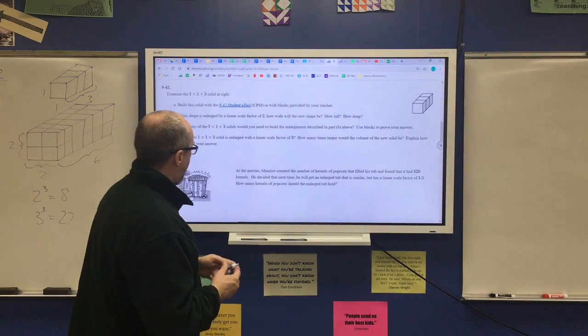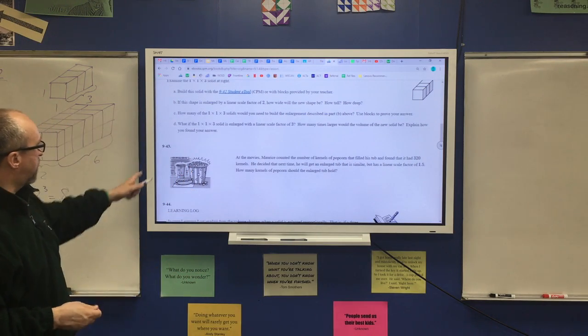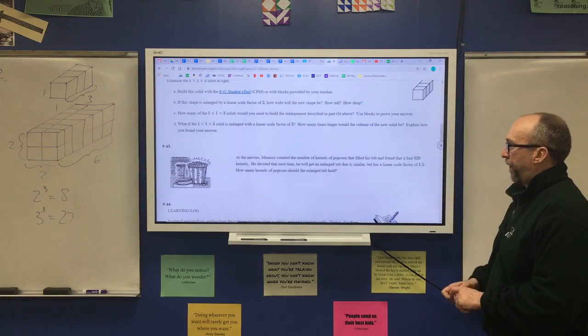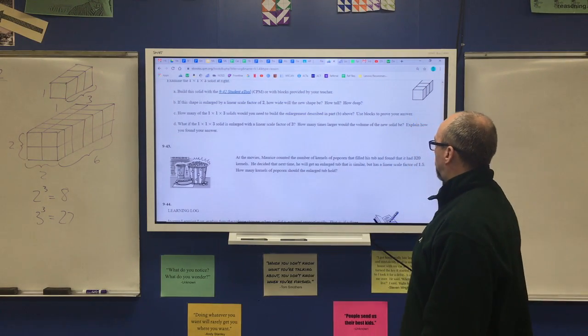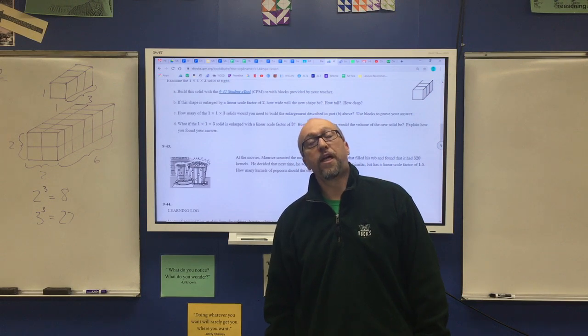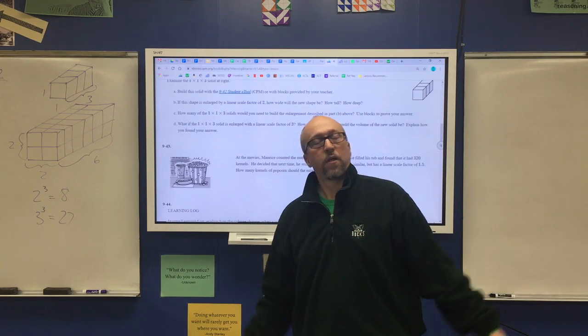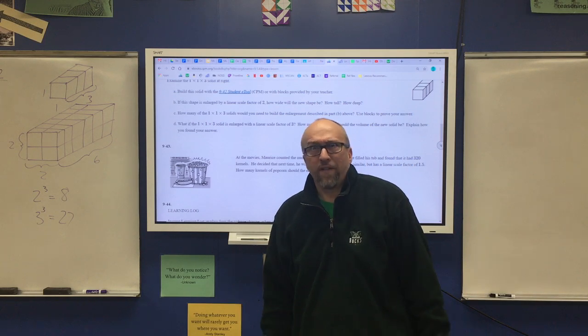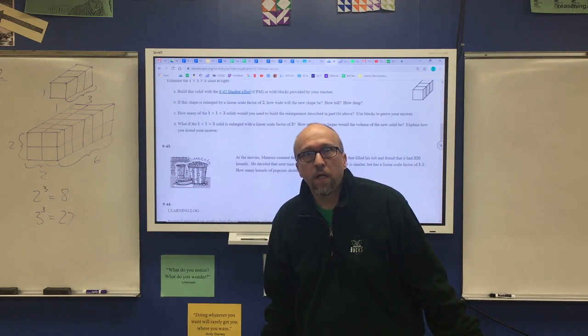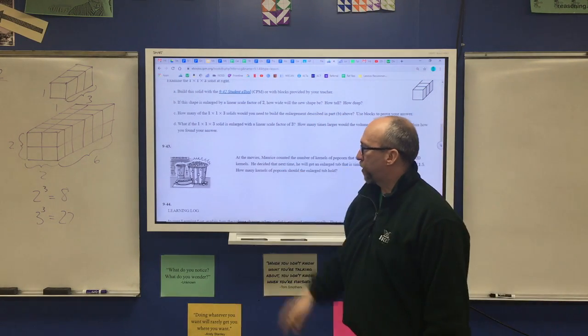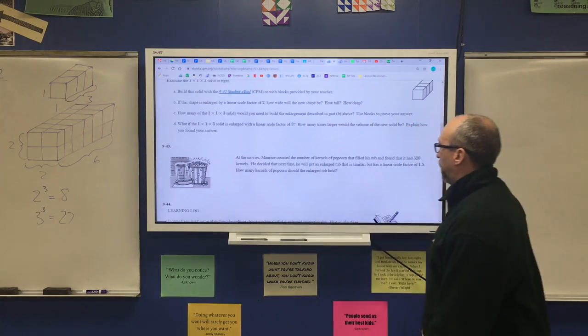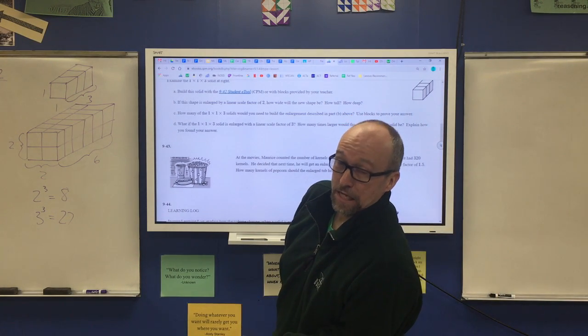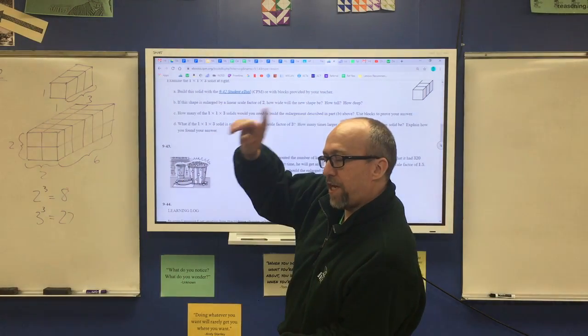Now, I want you to start using that thinking no matter how weird the shape is. Because when you look at number 943, they're talking about a popcorn bucket. So, Maurice counted the number of kernels of popcorn that filled his tub. He should have been watching the movie. What the hell, Maurice? Watch the movie. You don't count the kernels. I'm a math guy. What's wrong with you? Watch the movie. Anyway, and he found that there were 320 kernels of popcorn in his tub of popcorn. He decided that next time he'll get the enlarged tub. Now, you might be looking at me and thinking, he's an enlarged tub. And I have to say to you, that's hurtful.